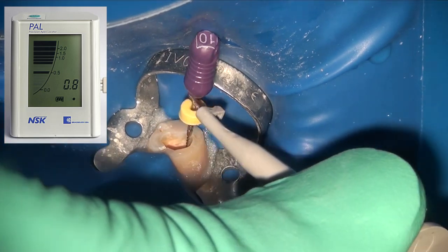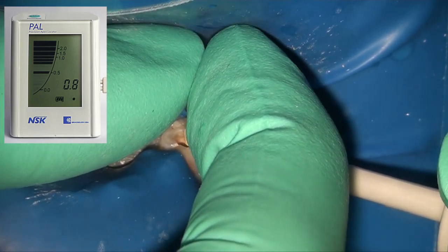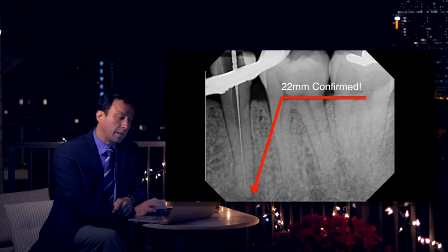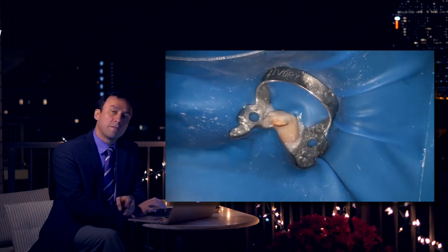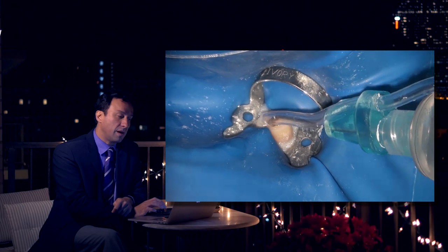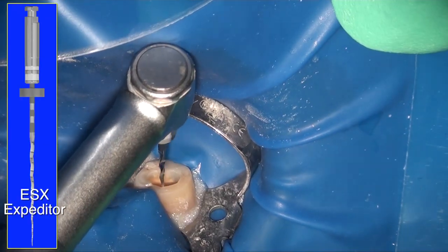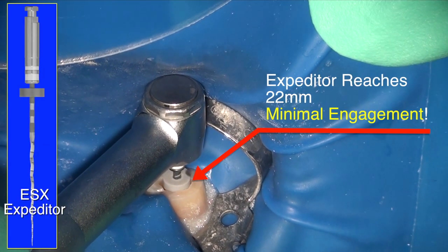At this point I'm comfortable measuring my working length. Using the PAL apex locator, I'm getting a 22mm working length. It's important to always confirm your working length with a radiograph — not just to confirm the length and accuracy of the apex locator, but also to get information about the shape of the root.